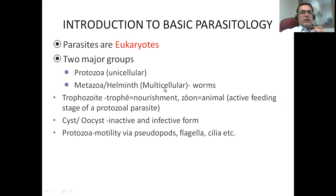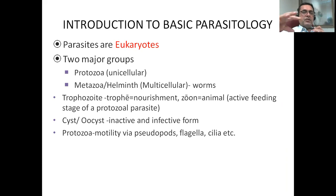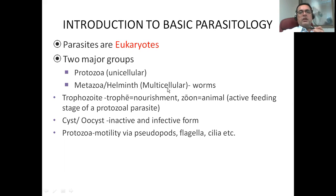The multicellular parasites evolved as a result of congregation of unicellular organisms. Single cells with specialized functions came together and distributed the burden of activities needed for a multicellular entity. So the cells specialized over time and gave rise to the helminths — the multicellular organisms. These are the two major groups: protozoa, the unicellular, and helminths, the multicellular, which are worms.